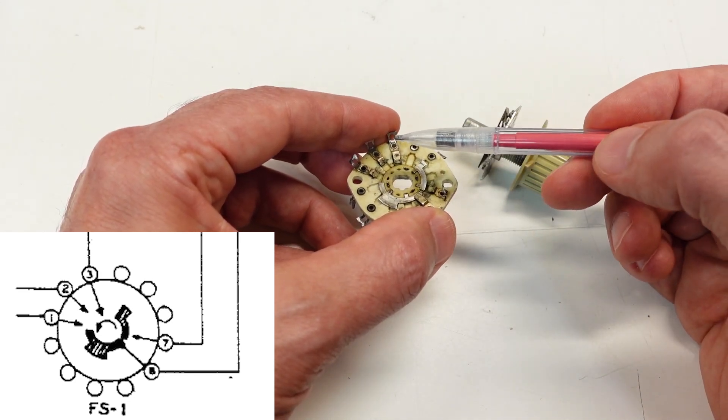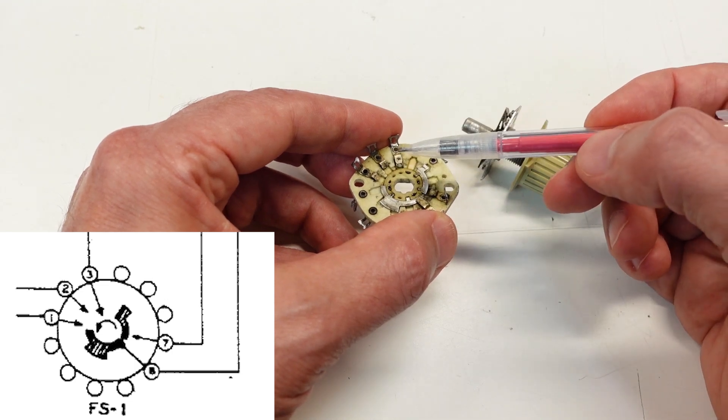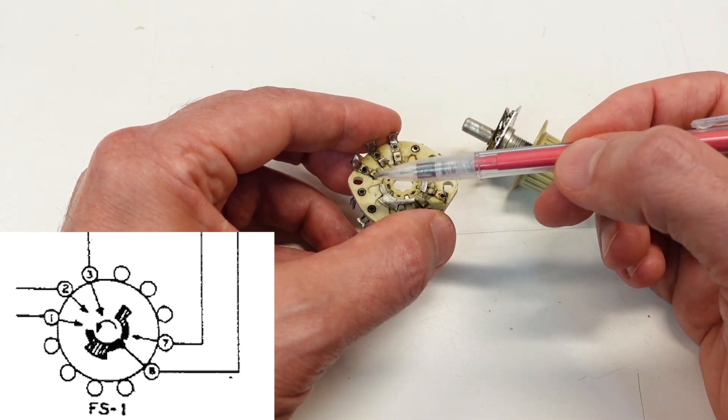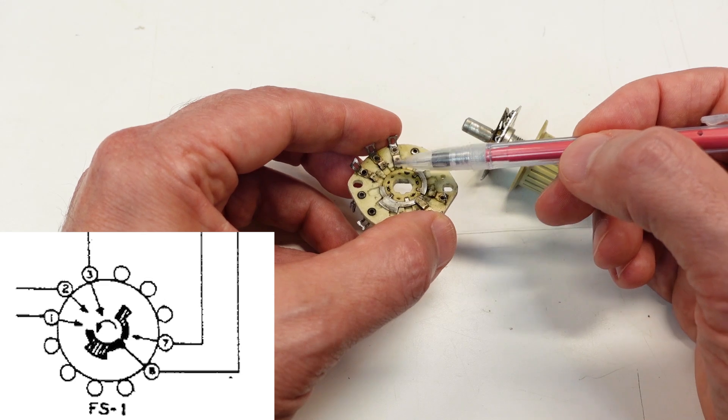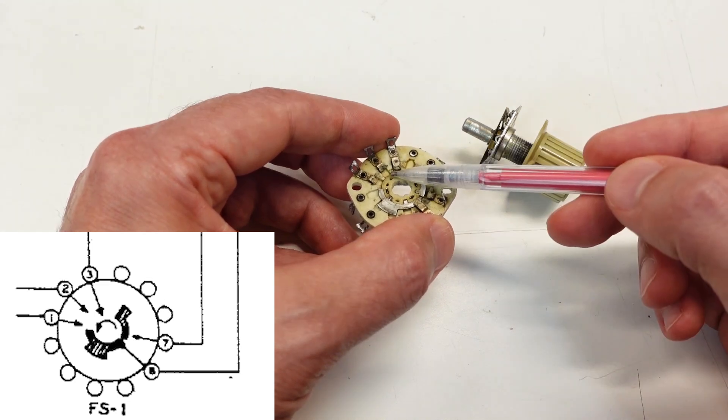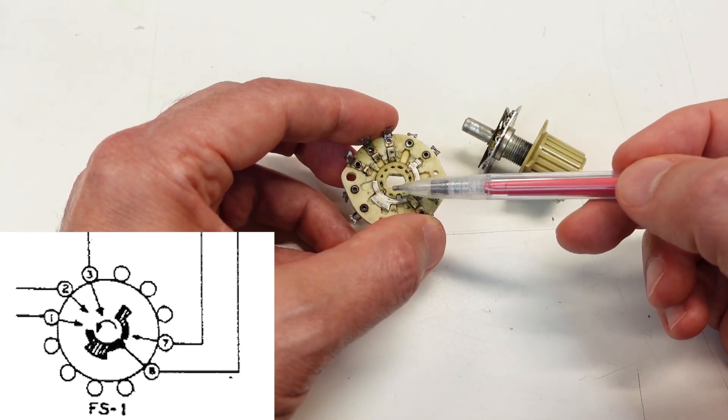And it'll connect it to the cathode in AM mode. And then you switch over to CW mode and it just puts a DC bias on that 6146.